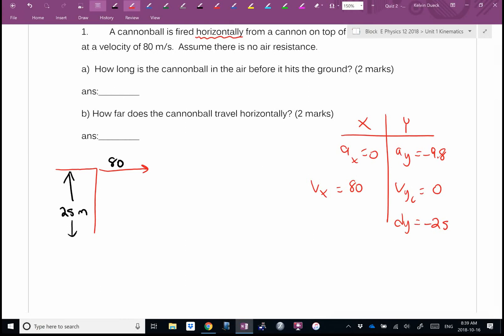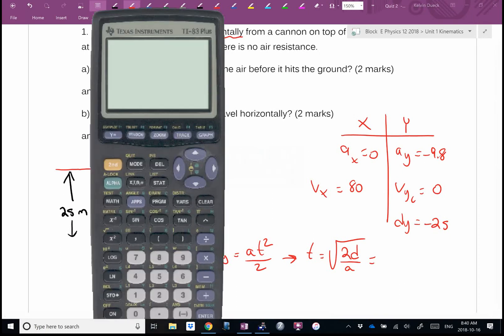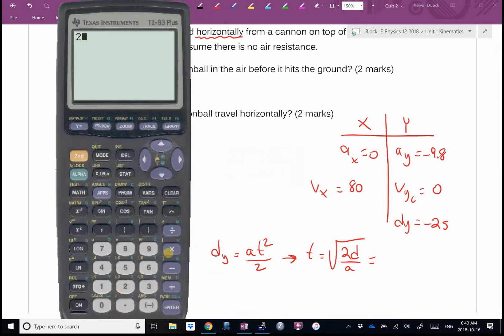This 25 - vertical or horizontal? Vertical. I call it dy equals negative 25 because it ended up below where we started. Which column do I know three things in? Vertical. I'm going to find time vertically. I can use d = Vit + (1/2)at². The Vit is zero, so times by two divided by a, square root.